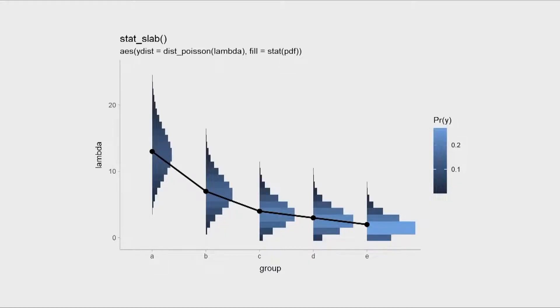All right, so here's an example of visualizing a Poisson distribution using a distribution vector from the distributional package. It knows that it's a discrete distribution, so it gives you a histogram instead of a density plot. And it also allows you to, for example, map the probability onto the color so you can get this nice little gradient effect.